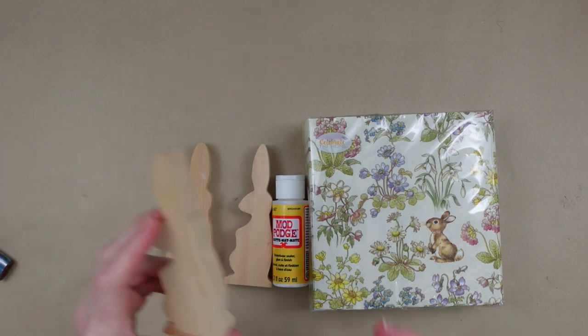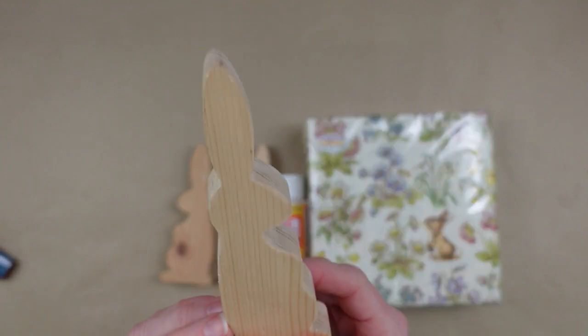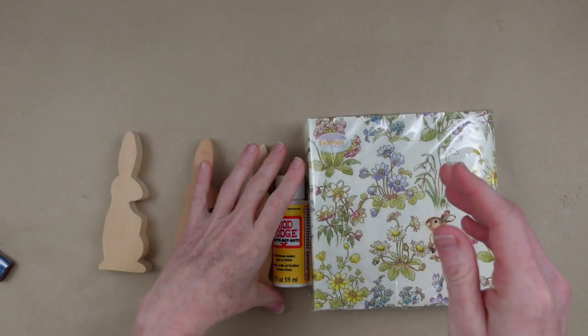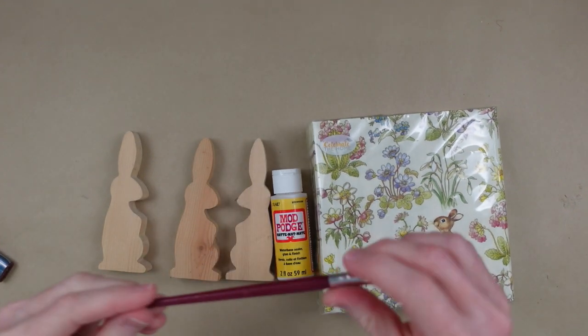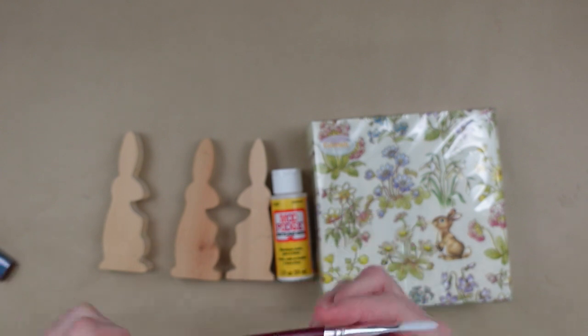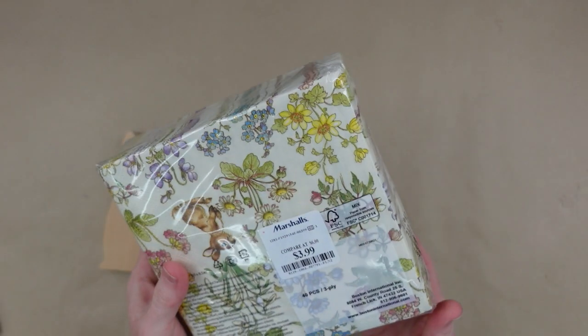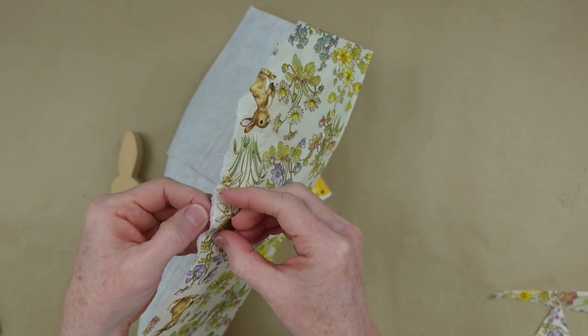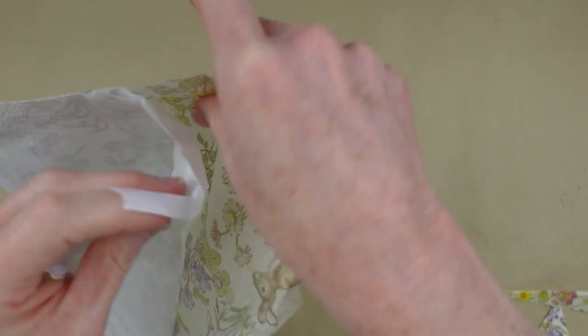We're going to start off with some little wooden cutouts. You can get stuff like this at craft stores, Dollar Tree, or the thrift store, which is where I got mine. I'm going to need some Mod Podge because we're going to decoupage today, a little paintbrush, a lighter, and some napkins. These gorgeous napkins came from Marshalls. They're beautiful and it just screams cottage to me.